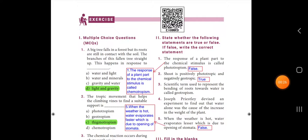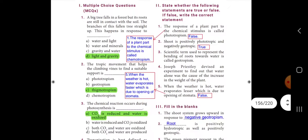First, multiple choice question. First one: when a big tree falls in a forest but its roots are still in contact with the soil, the branches of this fallen tree straighten up. This happens in response to — the answer is option D: light and gravity. Second: the tropic movement that helps the climbing vines to find a suitable support is — the answer is option C: thigmotropism.